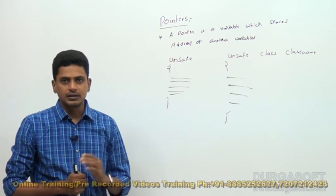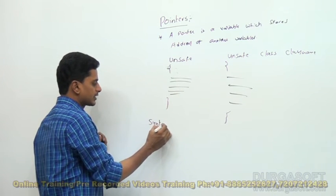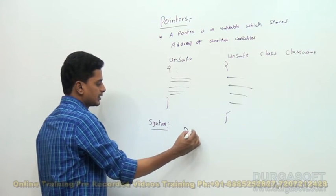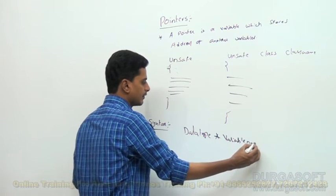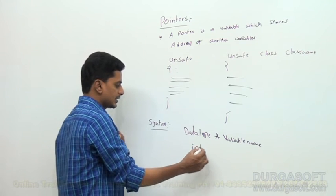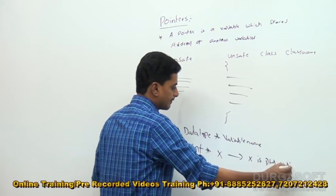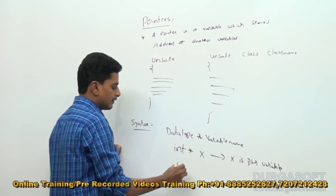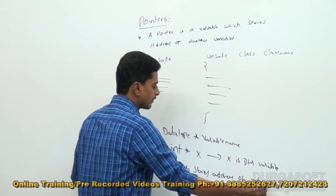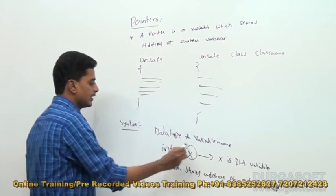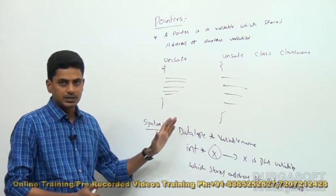To declare a pointer we have this syntax: data type asterisk variable name. For example, int asterisk x - here x is a pointer variable which stores the address of an integer value.